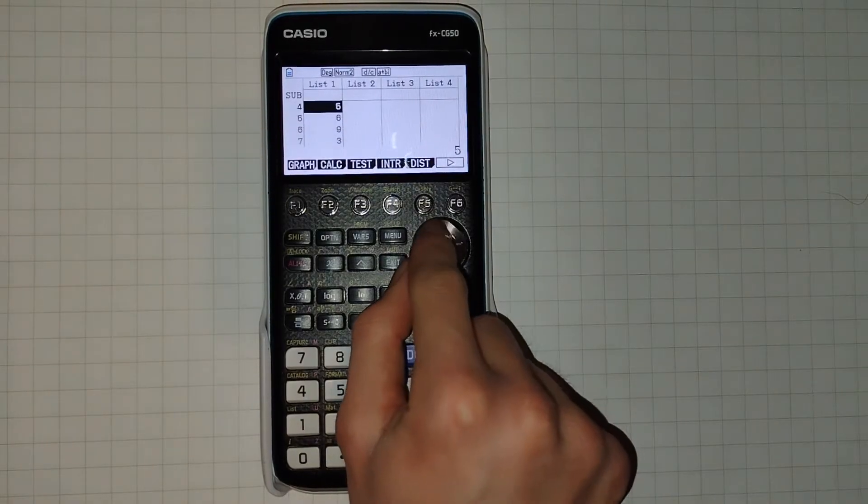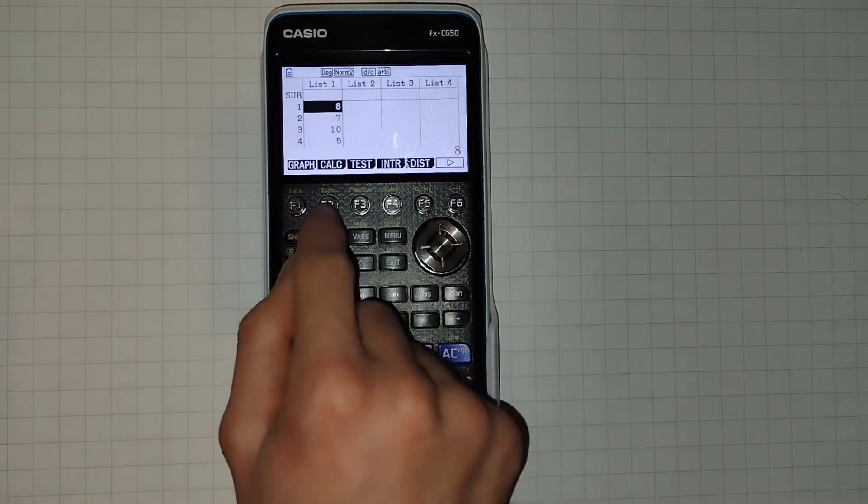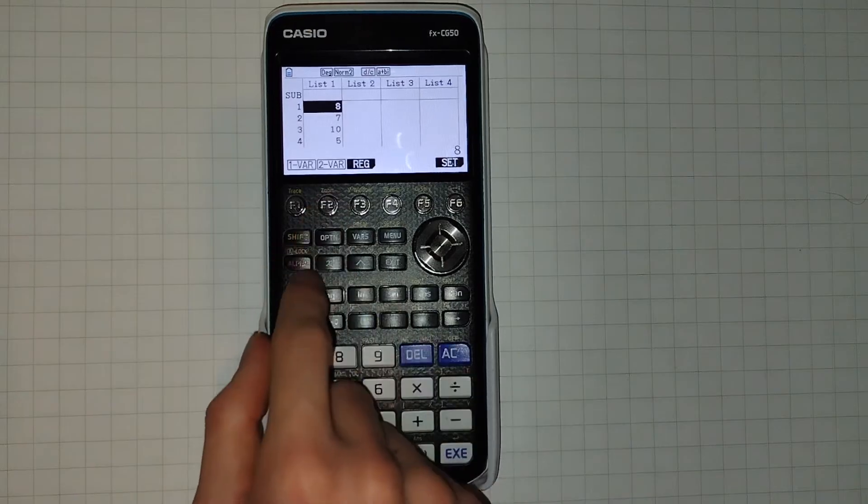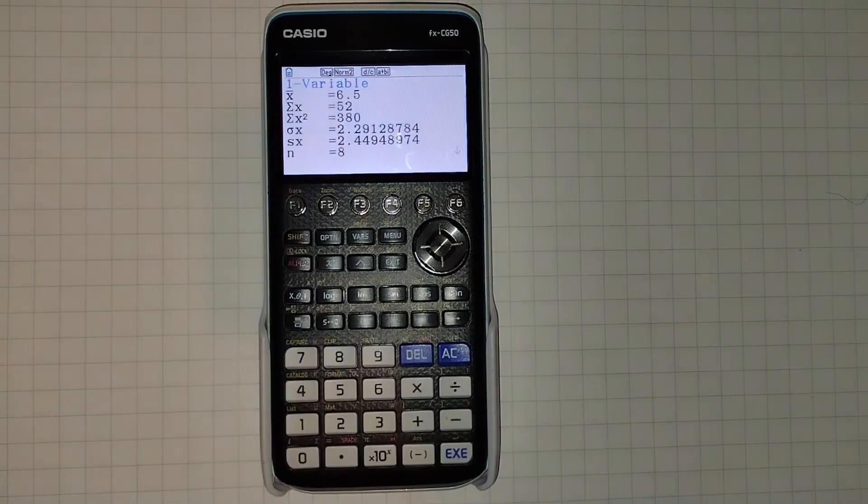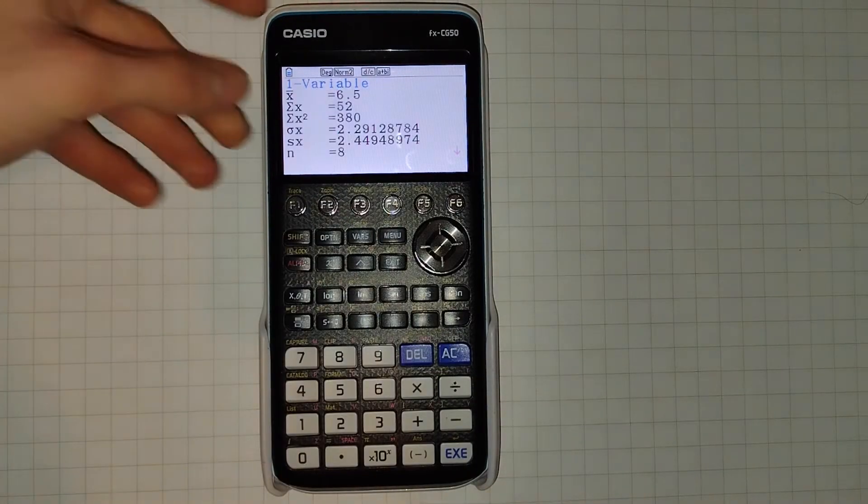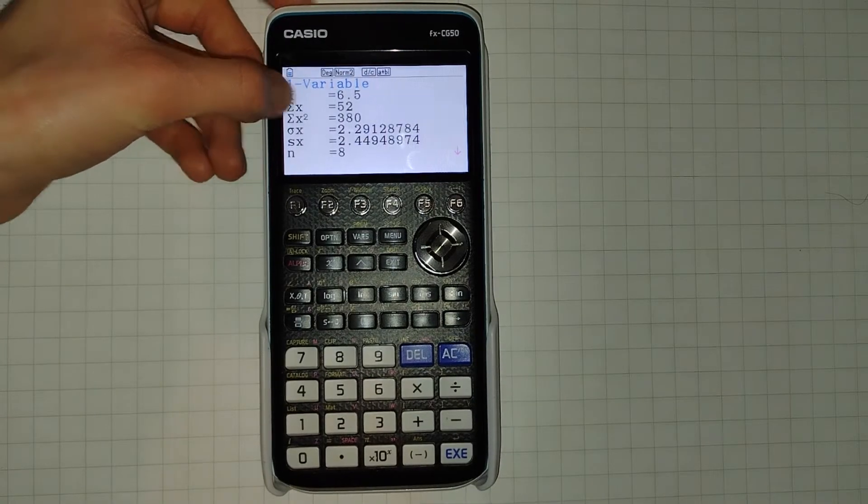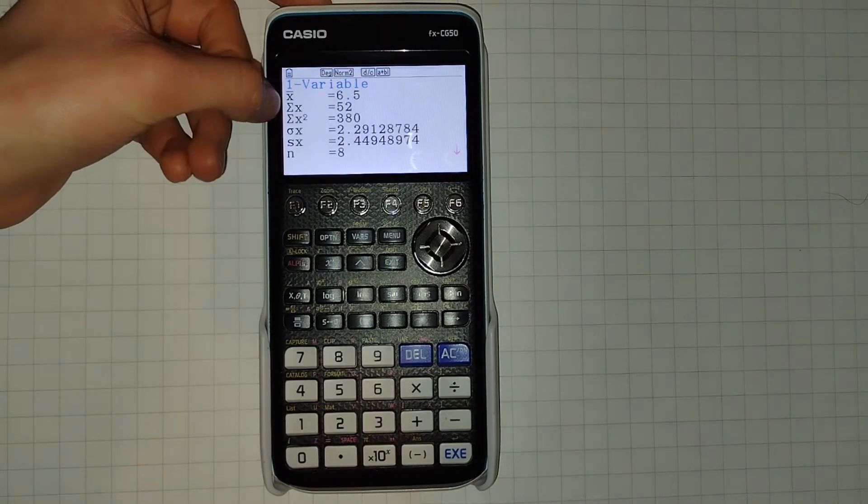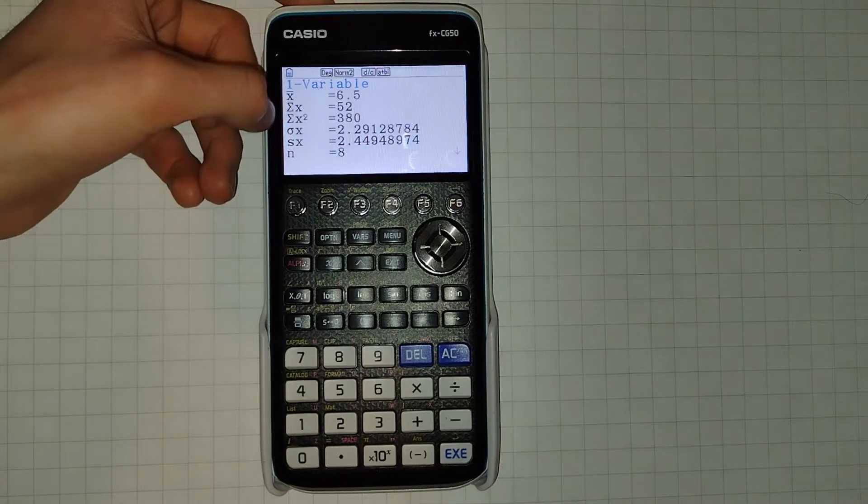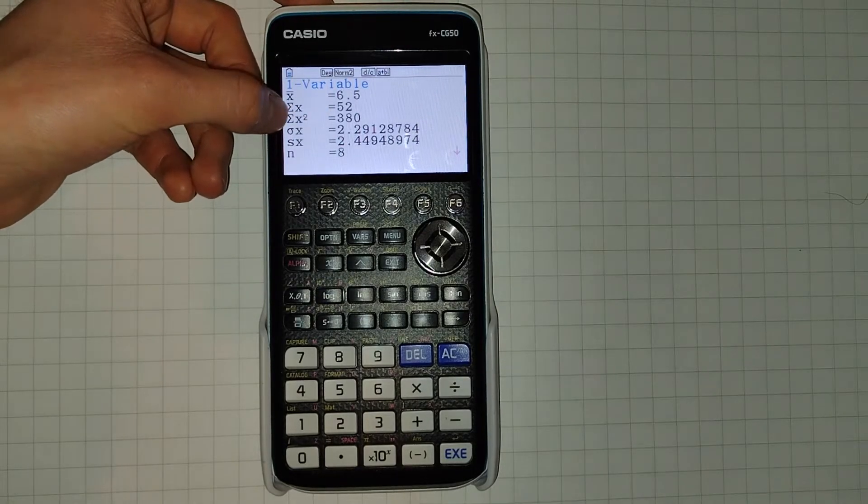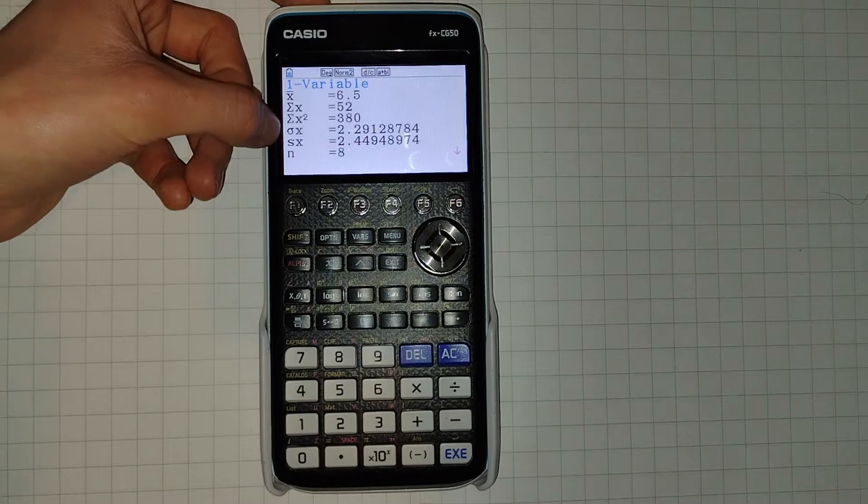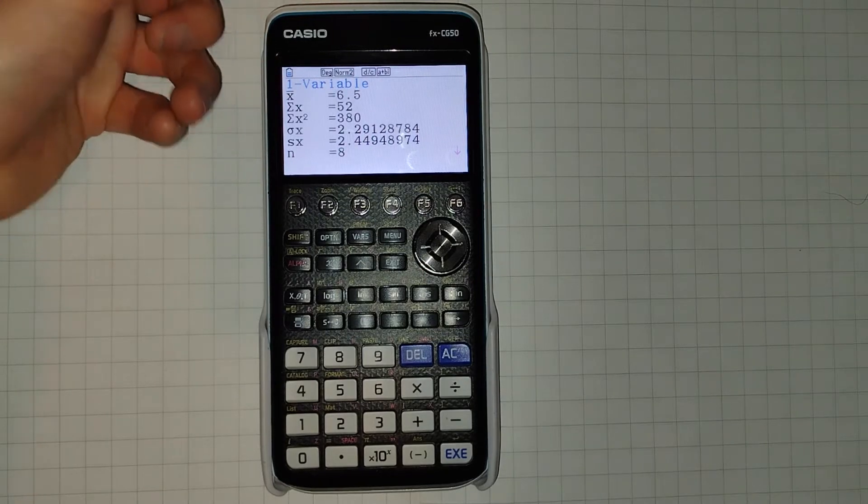Once you've entered some data, you can then click F2 and then F1 to perform some one-variable calculations on your data. For example, here we can see that the mean x-bar is 6.5, the sum of our data points is 52, while the sum of the squares is 380, the standard deviation is 2.29, and so on.